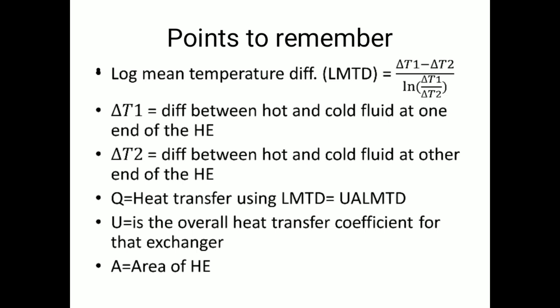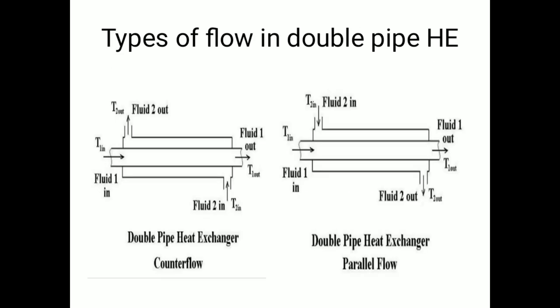The heat transfer Q using LMTD is equal to U·A·LMTD, where U is the overall heat transfer coefficient for that exchanger and A is the area of the heat exchanger.